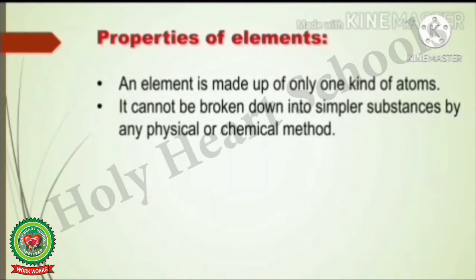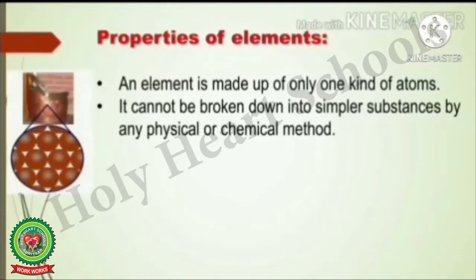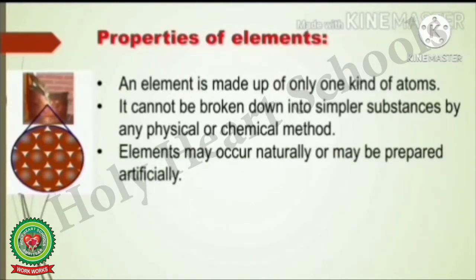An element cannot be broken down into simpler substances by any physical or chemical method. If we break a copper can, it will break into copper pieces only — we will obtain only copper atoms. Elements may occur naturally or may be prepared artificially. There are 118 elements in the periodic table; some are natural and some are prepared artificially.